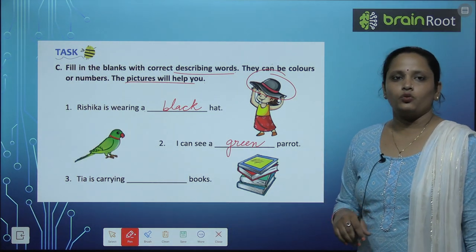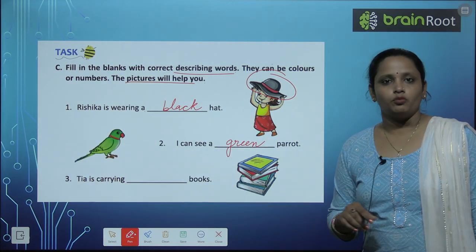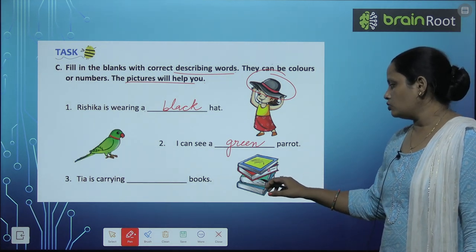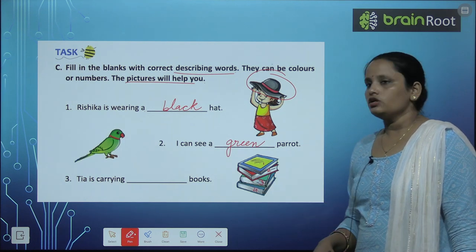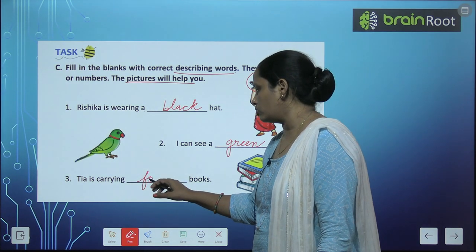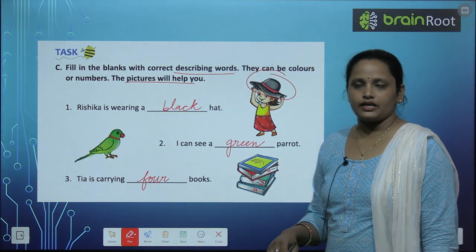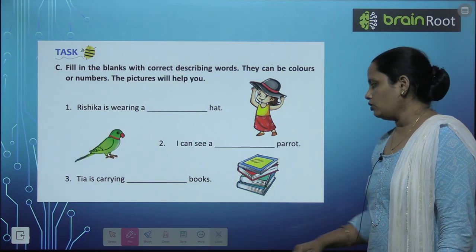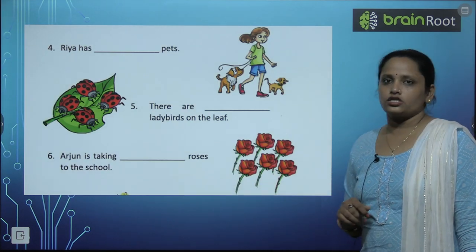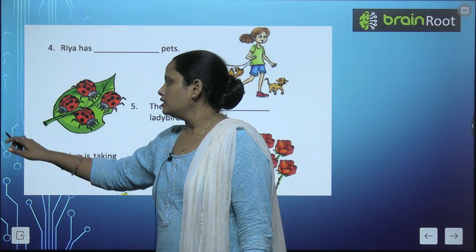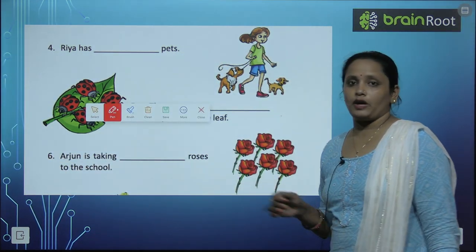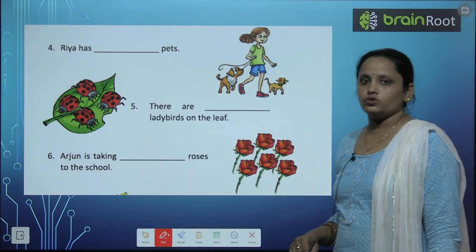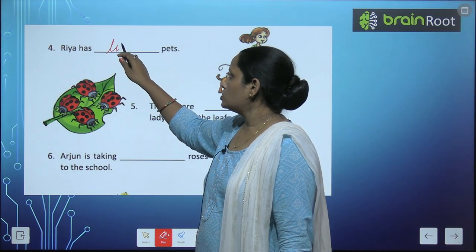Next, Tea is carrying blank books. Let's count how many books Tea has — one, two, three, four. So Tea is carrying four books. Next, Rhea has blank pets. Let's count — one, two. So she has two pets.